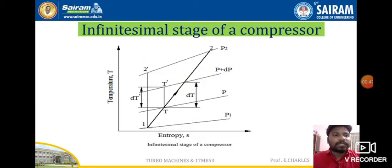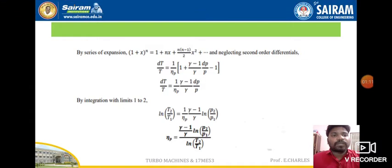Let us look at the infinitesimal stage of a compressor on the temperature-entropy (T-S) diagram. The pressure lines shown are p1, p, p plus dp, and p2. The difference dp corresponds to a temperature change dt, and t-dash represents dt-dash. This covers the infinitesimal stage of a compressor on the graph.